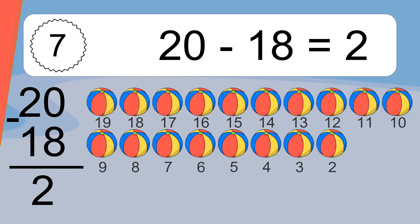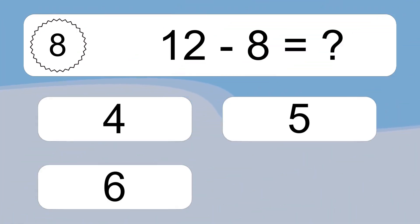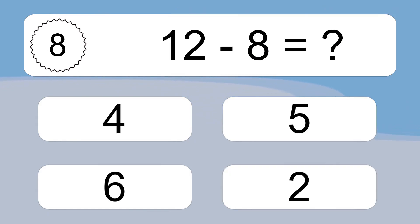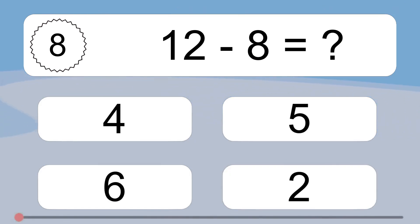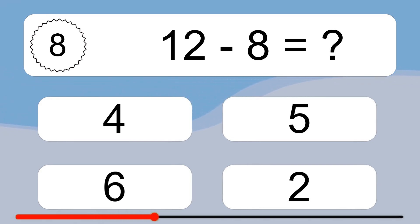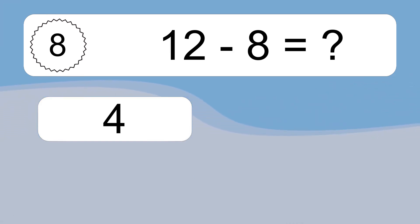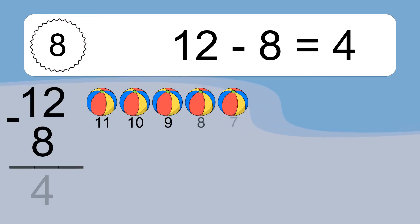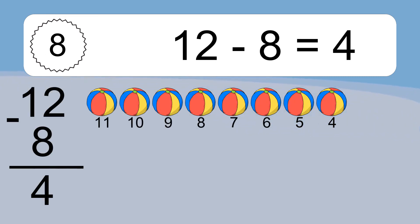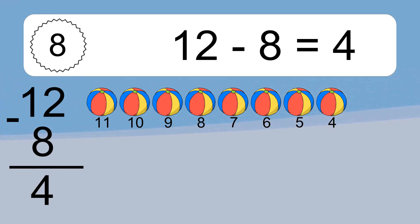12 minus 8 equals what? 12 minus 8 equals 4. Let's count it: 11, 10, 9, 8, 7, 6, 5, 4.